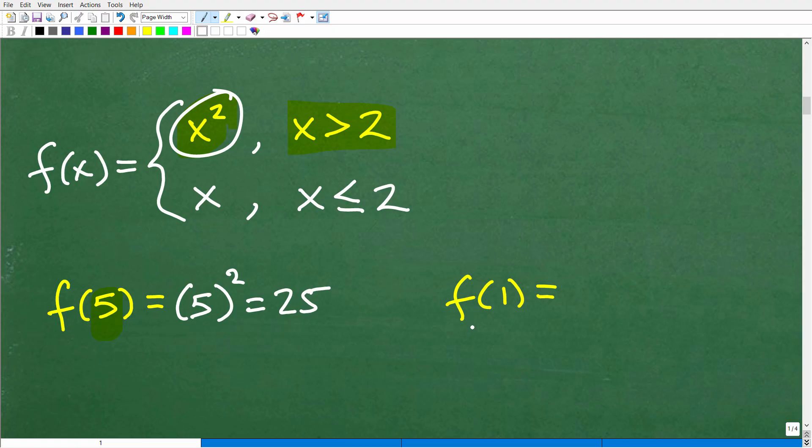All right, let's take a look at this example here. f of 1, we're like, okay, f of 1, 1 is less than 2. So, we have to use the x function. So, that's going to be super easy. We simply just plug in 1 for x. So, that's just 1. All right, so that's just a real quick example of how to evaluate piecewise functions.